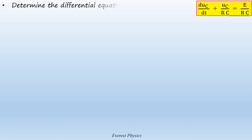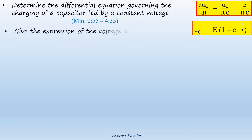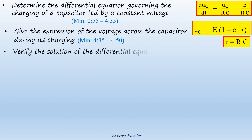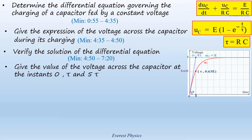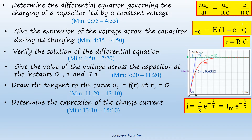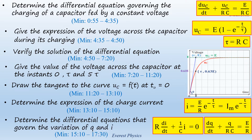In this video, we are going to determine the differential equation governing the charging of a capacitor fed by a constant voltage. Give the expression of the voltage across the capacitor during its charging, and verify the solution of the differential equation. Give the value of the voltage across the capacitor at the instances 0, tau, and 5 tau. Draw the tangent to the curve at time 0. Determine the expression of the charge current, and the differential equations governing the variation of charge Q and current I.